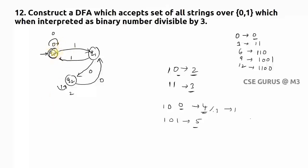Checking the DFA is complete: q0 to 0, q0 to 1, q1 to 0, q1 to 1, q2 to 0, q2 to 1 — all transitions are present. Verification with 12 (binary 1100): q0 → q1 (on 1) → q0 (on 1) → q0 (on 0, self-loop) → q0 (on 0, self-loop). Ends in q0, the final state — accepted, since 12 is divisible by 3.